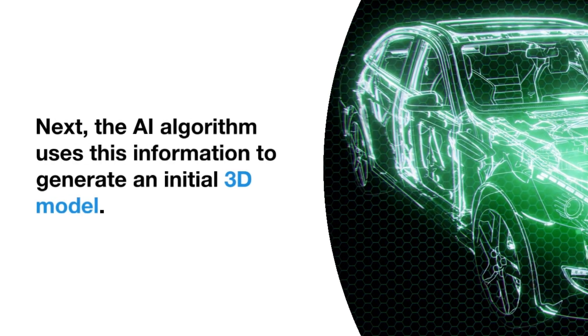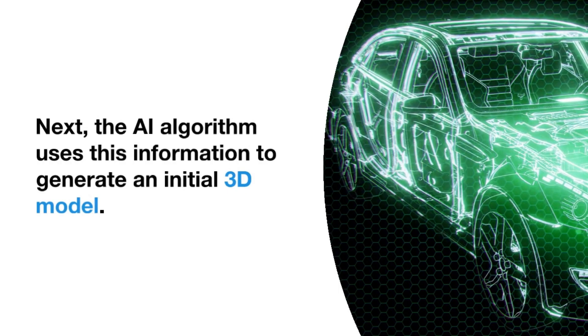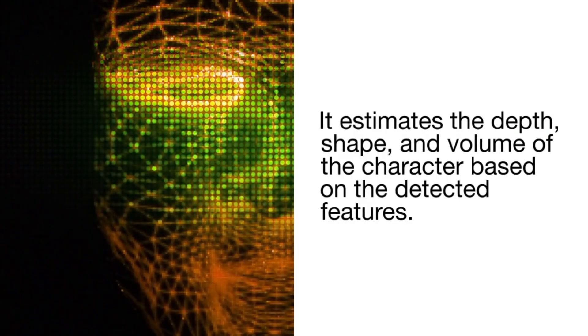Next, the AI algorithm uses this information to generate an initial 3D model. It estimates the depth, shape, and volume of the character based on the detected features. However, this initial model may not be perfect yet.